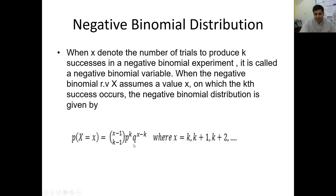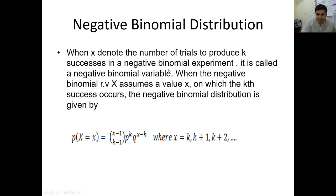This is the negative binomial distribution function when X denotes the number of trials to produce K successes. We will repeat again until we produce the required successes. For example, if I am throwing a coin and I repeat it for ten times, and in those ten times I get three successes — three hits — then the game is finished, considered a success. When X denotes the number of trials to produce K successes in a negative binomial experiment, it is called a negative binomial random variable.